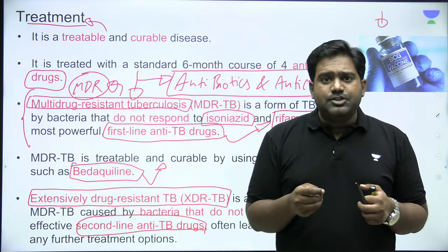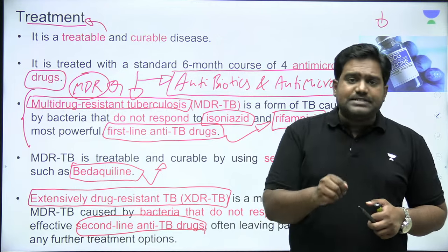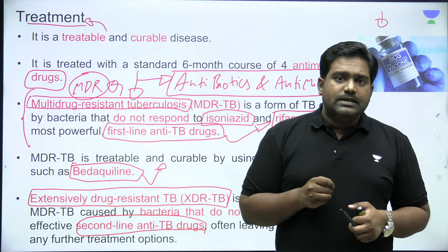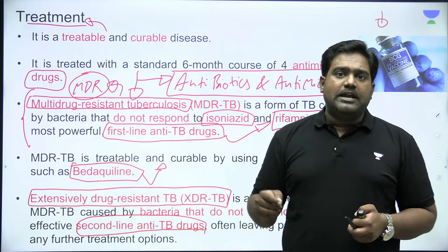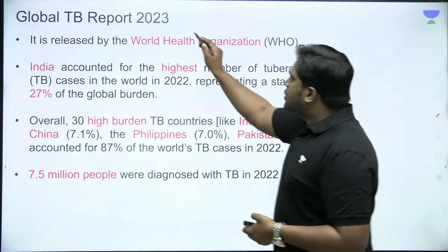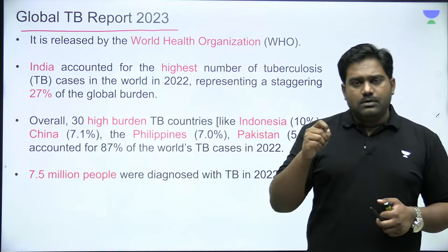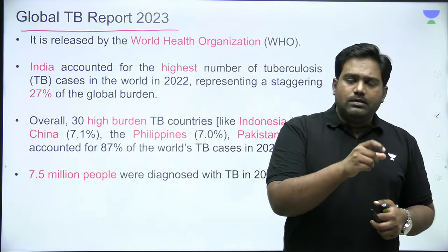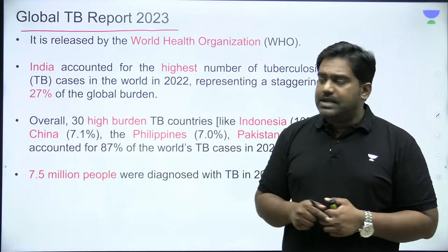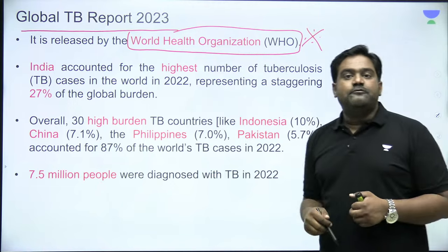India has a very high burden of multi-drug-resistant and extensively drug-resistant tuberculosis. This is one major challenge and serious concern. To understand the global status, the WHO published the Global TB Report for 2023, based on 2022 data — an important point for prelims. WHO publishes this report every year, and according to it, India has the highest disease burden in the world.